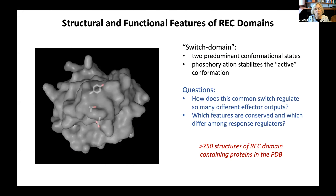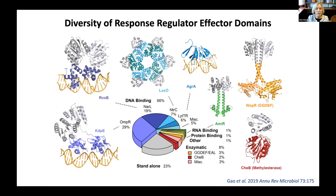How does this common switch regulate so many different effector outputs? And which features are conserved and which differ among response regulators? Specifically, are things observed in one response regulator true for all? We now have answers to these questions with help from more than 750 structures of proteins containing receiver domains that have been deposited in the PDB. There is an enormous structural diversity among the hundreds of thousands of response regulators. They can be classified by the structures of their effector domains.